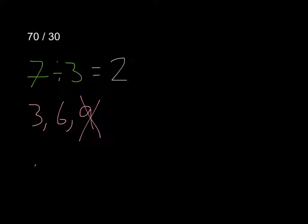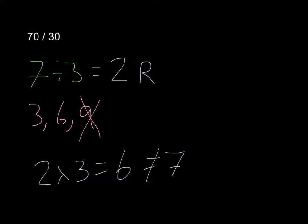So I'm going to have that equal to 2. But 2 times 3 is 6. It's not equal to 7. So I know that I have a remainder, and that is a remainder of 1.